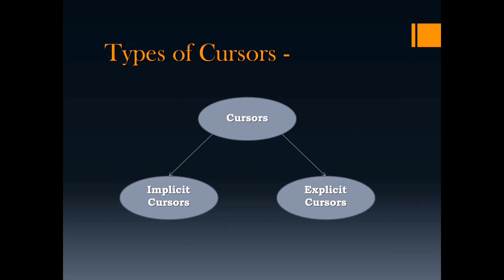The first type is implicit cursors, which are automatically created by Oracle. The second type is explicit cursors, which are defined by the programmer. Let's understand the two types of cursors in detail.